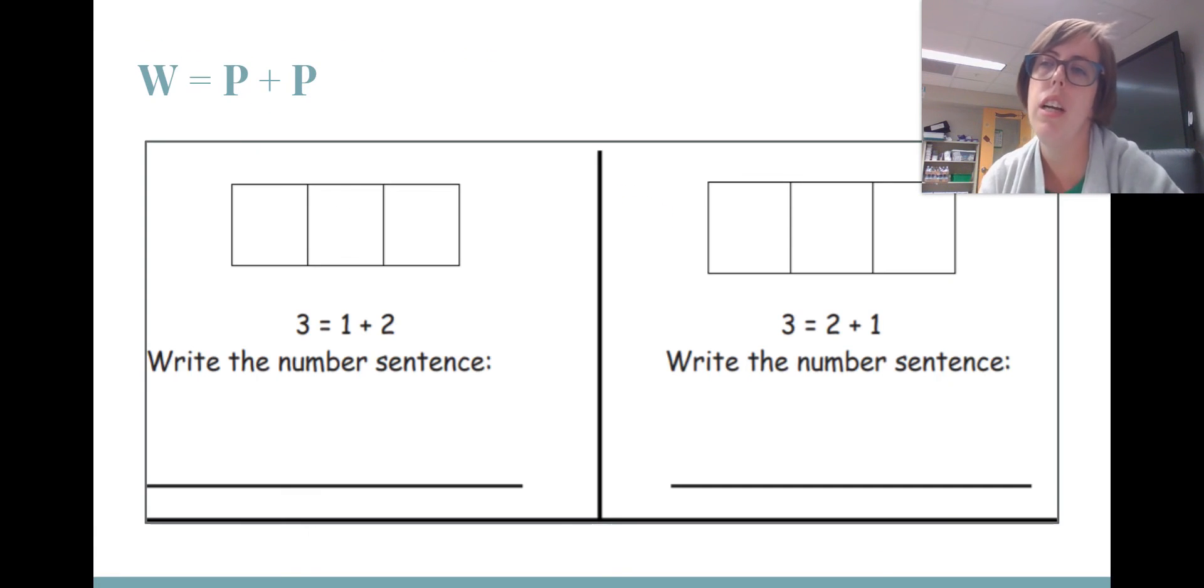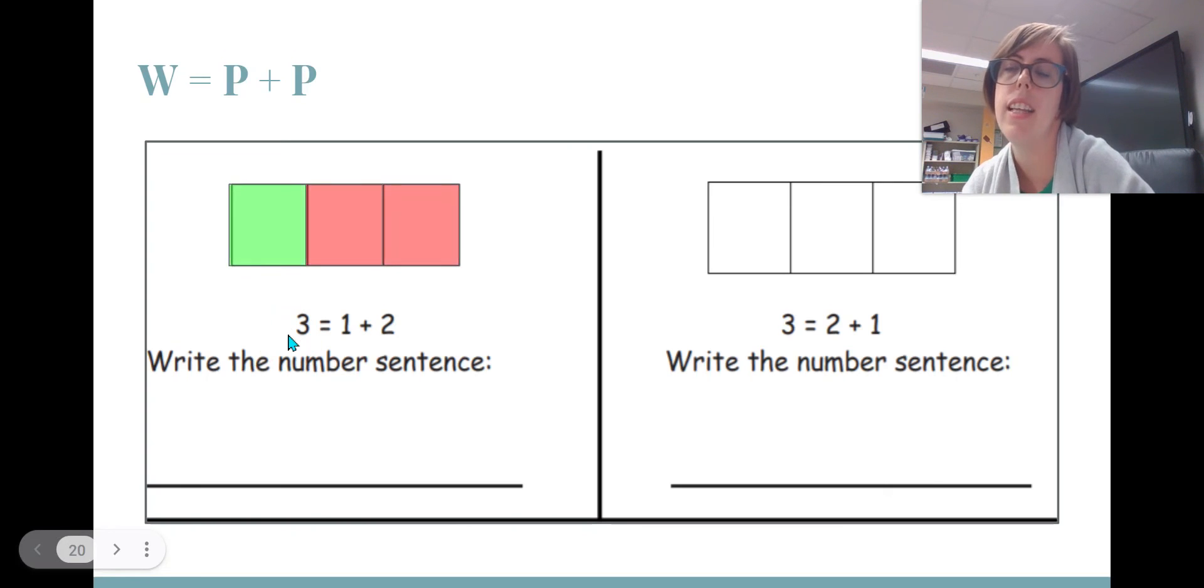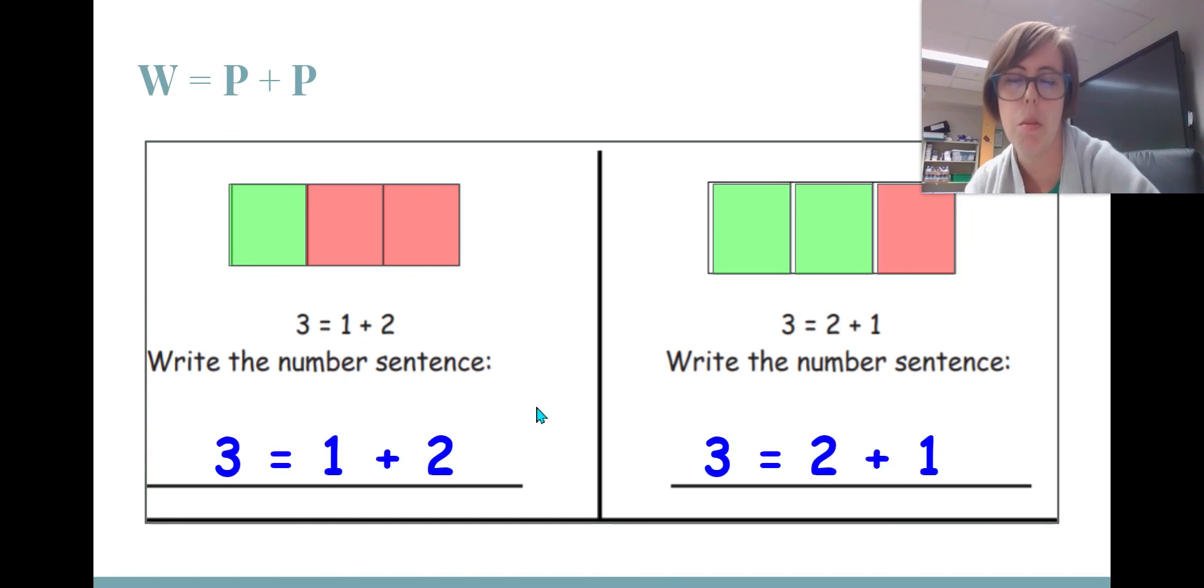We are also continuing to work on our whole equals part plus part. So these are both threes. We've done it up to four and to five. With a number sentence, can they draw the picture, or rather color in the picture, to show the difference? So this one is one plus two. This one is two plus one. So we color one first and then two, or we color two first and then one, and then they practice writing the number sentence. We are doing it a lot in class. It's going to be really crucial for them as we get further through the math program for them to be able to do this work.